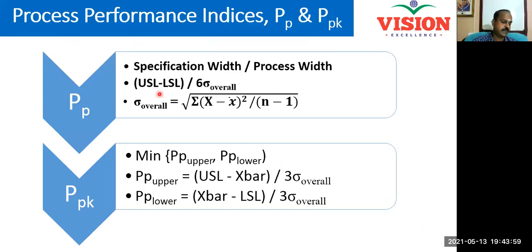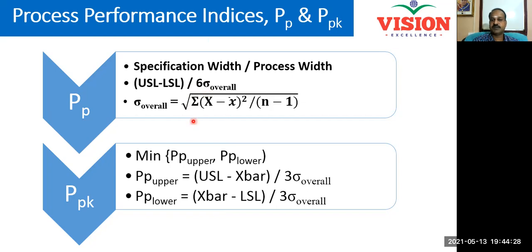The formula for calculating Pp and Ppk — or equivalently Cp and Cpk, with C replacing P — is as follows. Pp is a ratio between specification width and process width: USL minus LSL divided by 6 sigma, where sigma is sigma overall. Sigma overall is calculated as the square root of the summation of (x minus x-bar) squared divided by (n minus 1). Use all the data you have collected because the maximum variation reflects only in the overall standard deviation, not in within, between, or combined standard deviation.